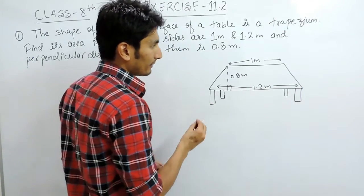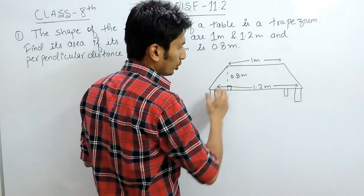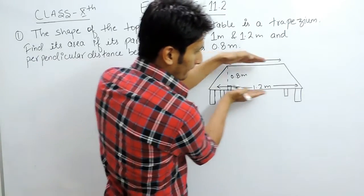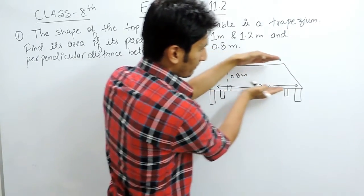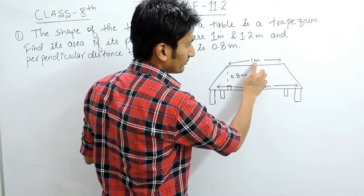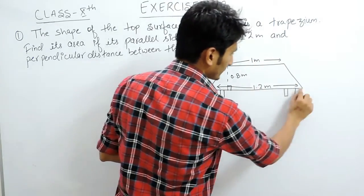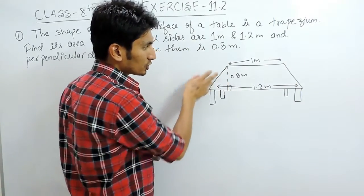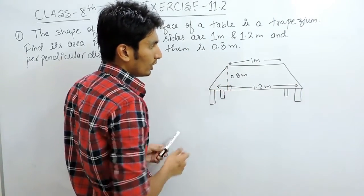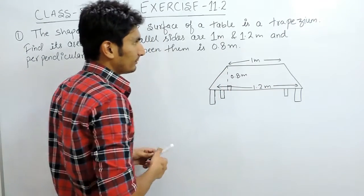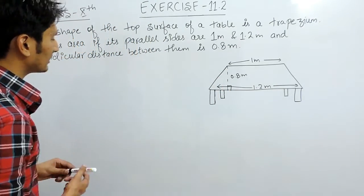Trapezium is a quadrilateral whose any two sides are parallel. These two sides are parallel and the measurement of these are given as 1 meter and 1.2 meters, and the perpendicular distance which is the shortest distance between these two is given as 0.8 meters. You have to find the area of the surface.